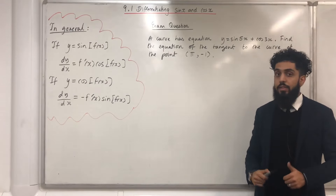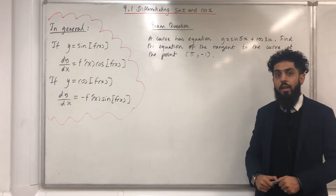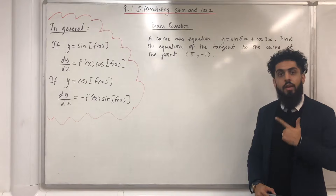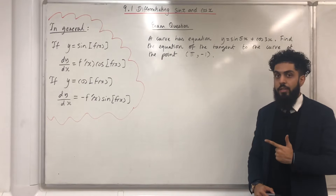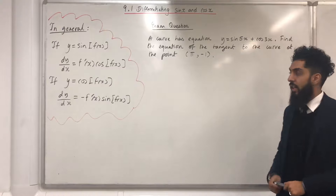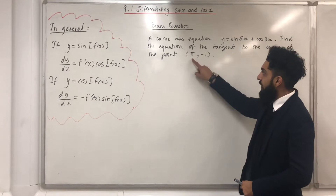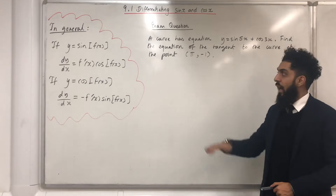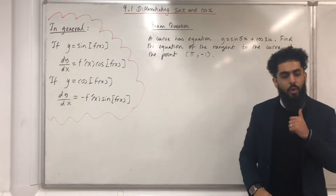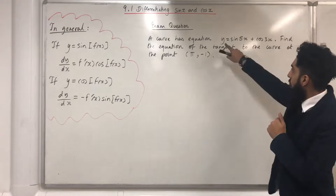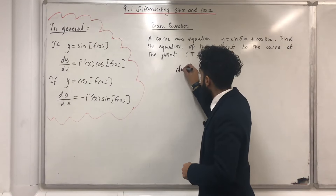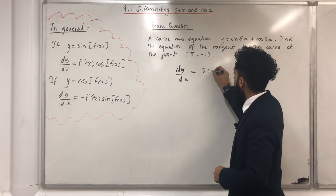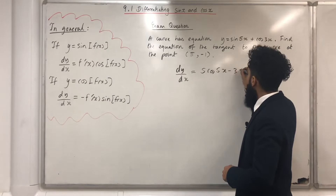In general, to find the equation of the tangent to a curve at a specific point, we need two things: the gradient of the tangent, and the point the tangent passes through. In this question, we are given the point pi, minus 1. What we need to find is the gradient of the tangent. So we differentiate y: dy/dx equals 5 Cos 5x minus 3 Sine 3x.